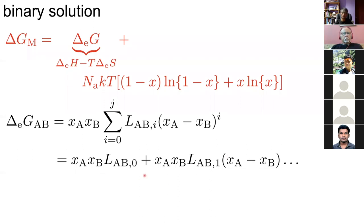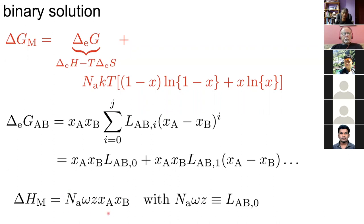Expanding to i equals zero and i equals one, the first term — x_A x_B times a regular solution constant — you can identify L_AB^0 with the regular solution constant. An additional term accounts for situations where one term may not adequately represent the variation of excess free energy with concentration. If you discover a different value of L_AB^1 in future work, you can modify just that term without reworking everything else when you have new, more accurate data.